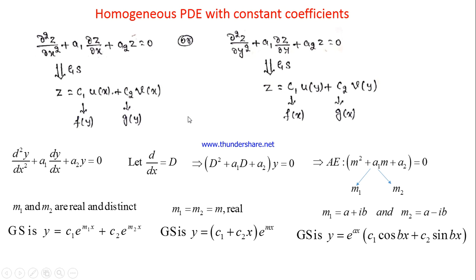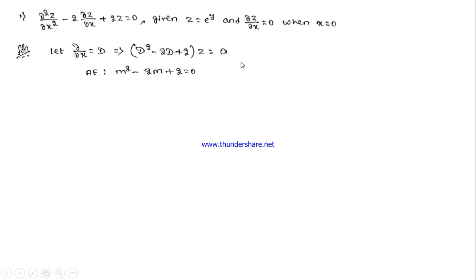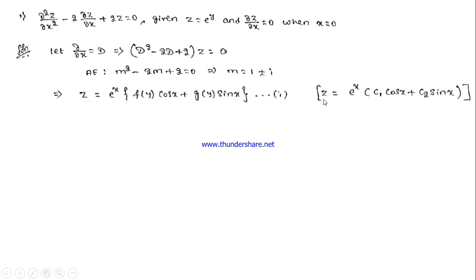Let me understand this through examples. In the first case, take ∂/∂x = D. The equation becomes (D² − 2D + 2)z = 0. Writing the auxiliary equation and finding the roots gives m = 1 ± i. So the general solution is z = eˣ(c₁ cos x + c₂ sin x). Since y is the other variable, c₁ and c₂ must be expressed in terms of y, written as f(y) and g(y). This is the general solution of the given partial differential equation.